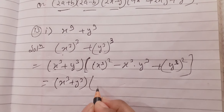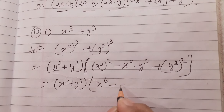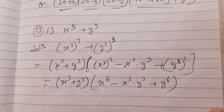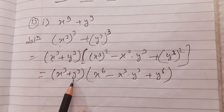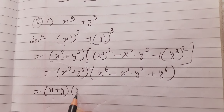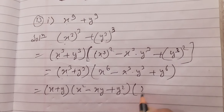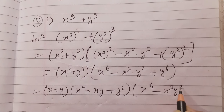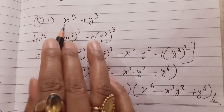We can open x³ + y³ once more. (x³)² is x⁶, and (y³)² is y⁶. So we have x³ + y³ times (x⁶ - x³y³ + y⁶). You might think the answer is done with two factors, but we can break x³ + y³ further. That gives (x + y)(x² - xy + y²). So these are the three factors of this expression.